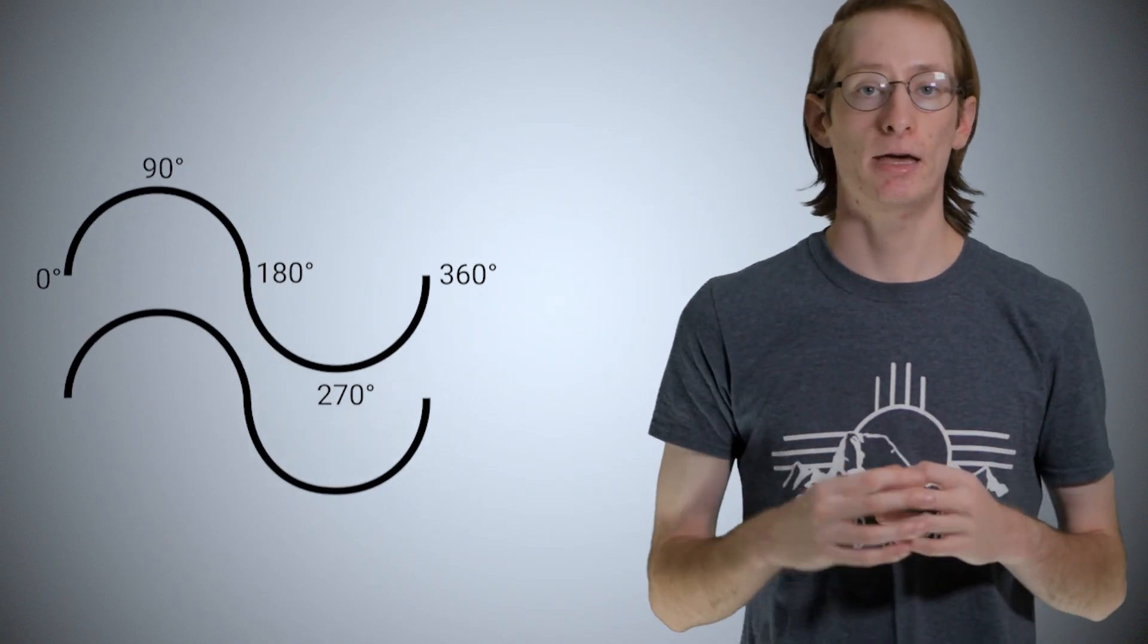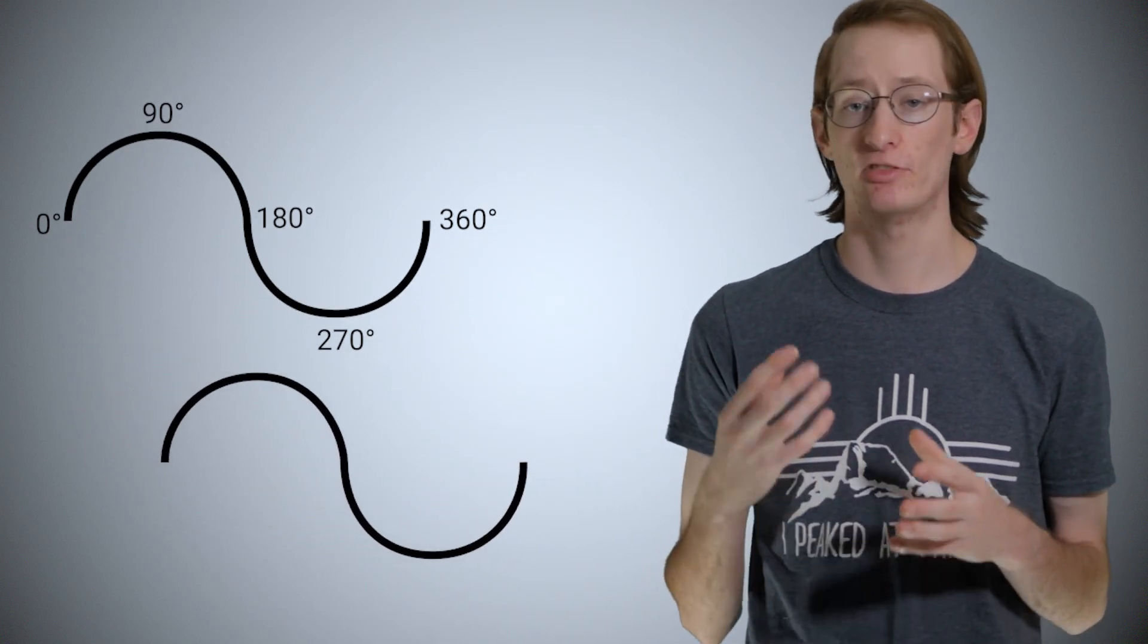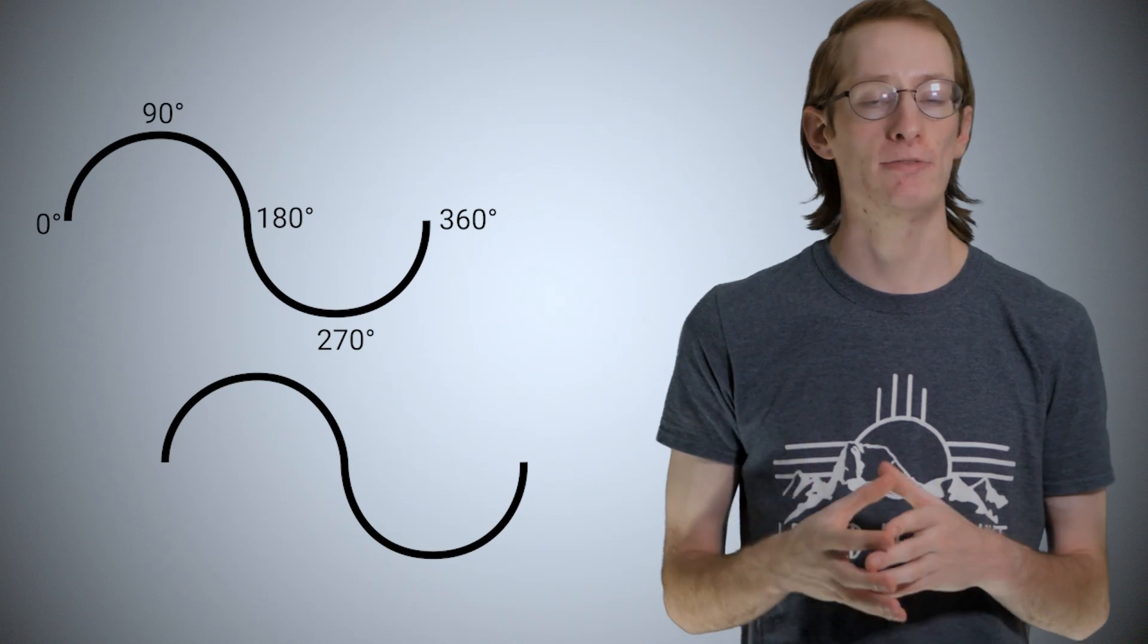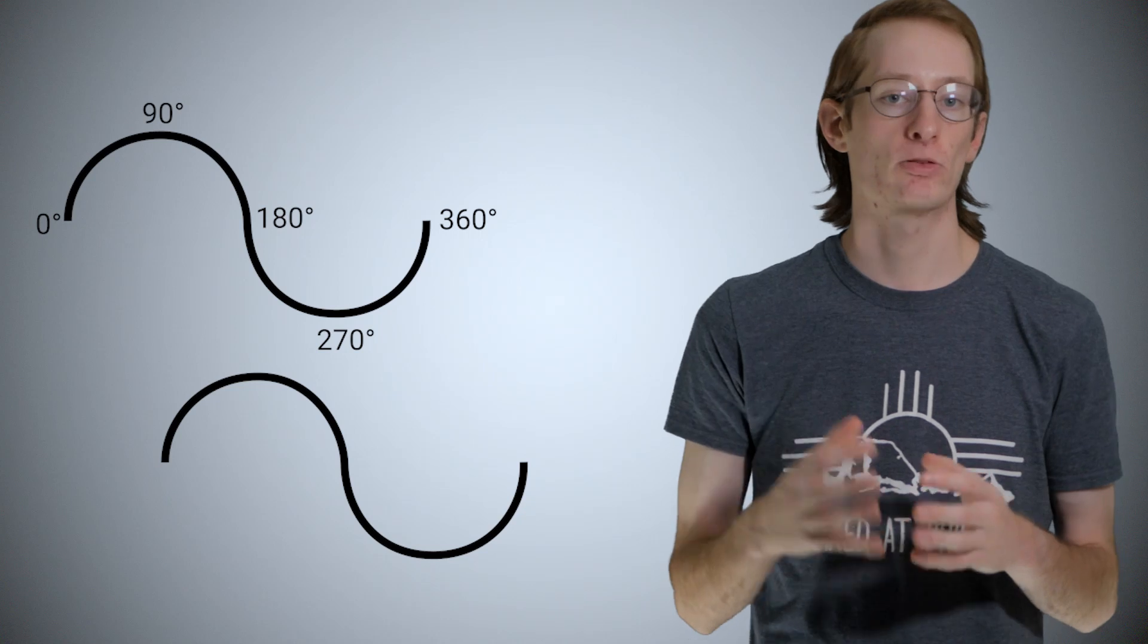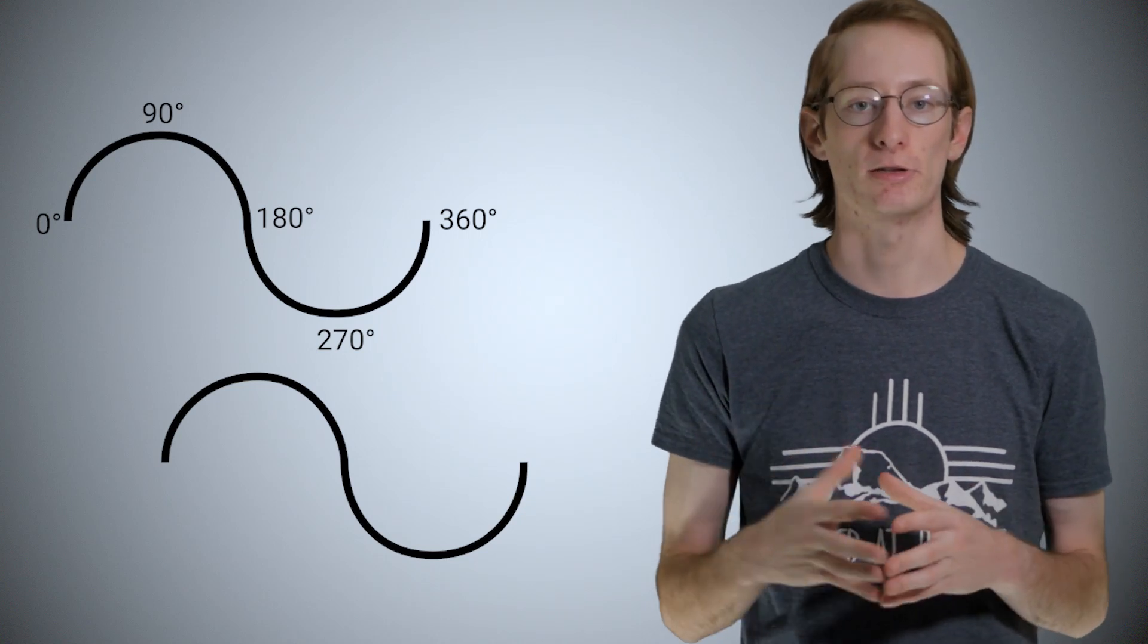If I take a second, identical sine wave, but have it start when the first wave reaches the positive peak, we would say the second wave is 90 degrees out of phase. Again, it's important to understand that phase is a relationship between two signals.